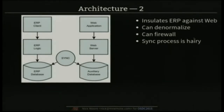One option is to synchronize data off to another database and use that. That gives you a layer of insulation — you can run a firewall down the middle, having one side on the DMZ and the other on the core network. The sync process can be a bit hairy, but you do have an opportunity to denormalize the data and make access much quicker.